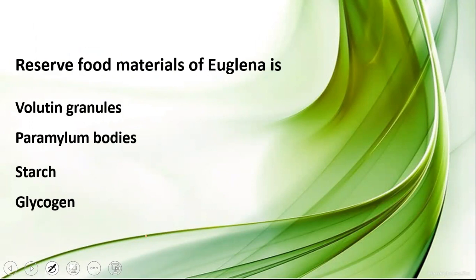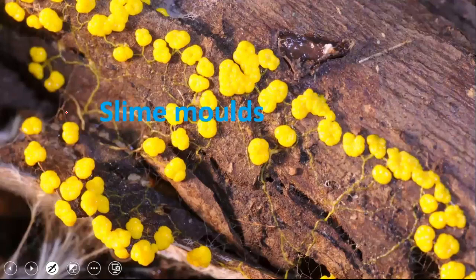A frequently asked MCQ: what is the reserve food material of Euglena? The options would include volutin granules, paramylum bodies, starch, and glycogen. Euglena does not store food as starch or glycogen; it stores food in the form of paramylum bodies. The correct answer is paramylum bodies.